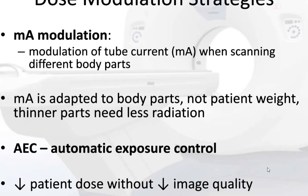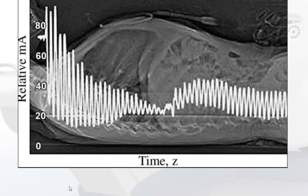There are other dose modulation strategies. MA modulation is the modulation of tube current when scanning different body parts — MA is adapted to the body part, not patient weight. Thinner parts need less radiation. AEC is automatic exposure control.